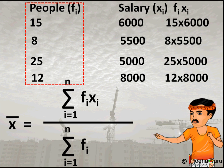So the sum of salaries is 6000 plus 6000 plus 6000, 15 times. Instead of that, we did 15 × 6000. Same way, 8 × 5500, 25 × 5000, 12 × 8000.